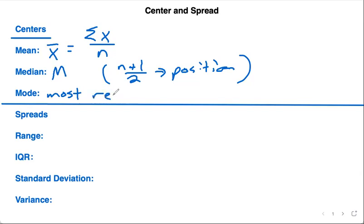Mode is the most repeated number. You can have more than one mode, called maybe bimodal if there's two of them. You can have no mode, which means they all occur the same amount of times.